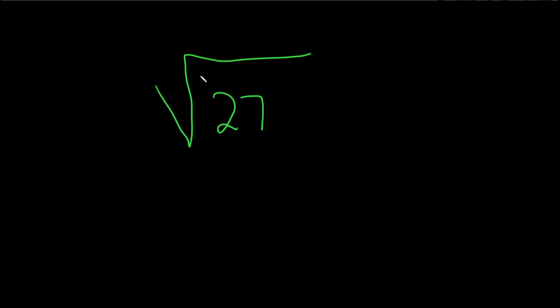So when you see something like this, the square root of 27, you want to go to the side and think, what's the largest factor of 27 that's a perfect square? So what that means is, what's the largest factor of 27 that you can take the square root of and get a whole number?